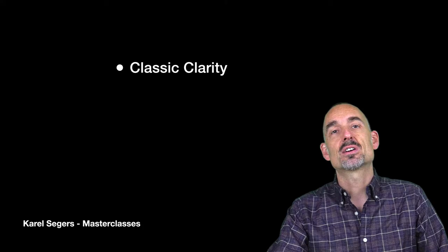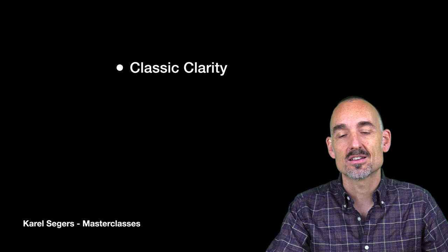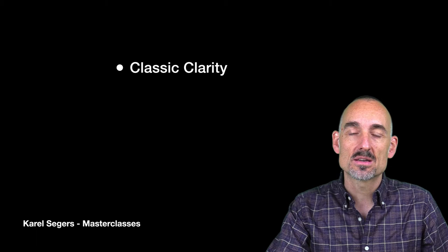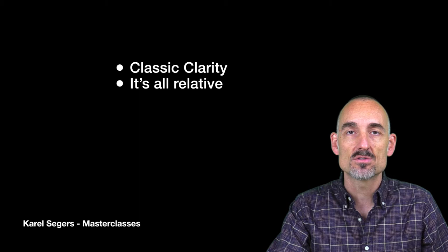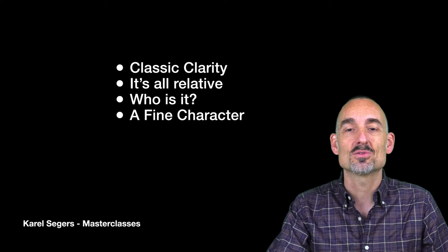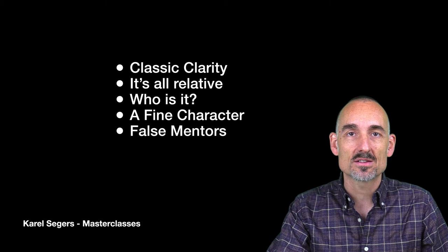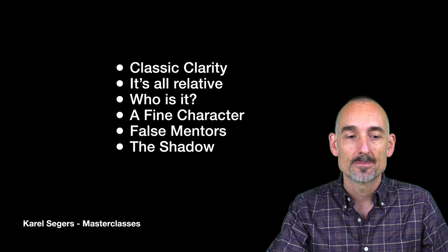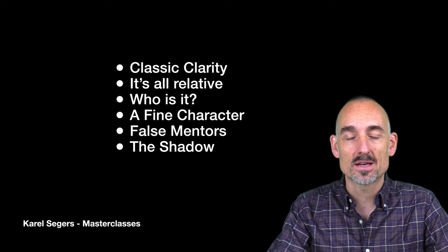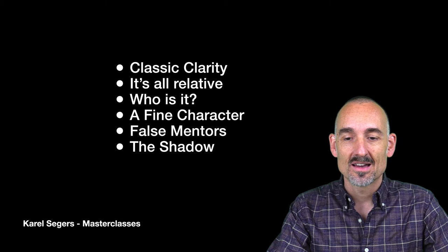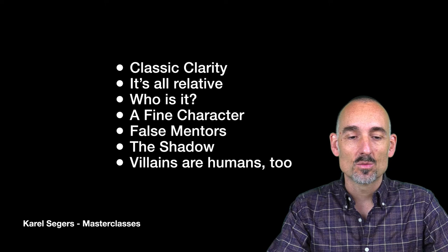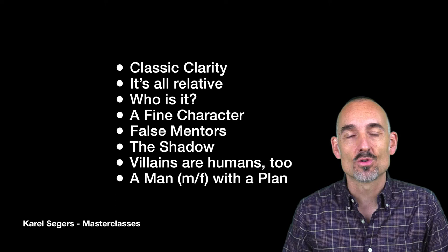Today we look at some examples of classic clarity in terms of who is the antagonist set up early and clearly. We'll talk about how these relationships are essentially relative, and how it's sometimes a challenge to identify who is the antagonist. Sometimes they're just fine, charming characters, and some of those are also false mentors. We'll talk about the shadow, and we'll come back with examples of strong shadow characters and see how that is metaphorically expressed on screen. Villains are humans too, and we want those shadow characters to be strong, resourceful, and have purpose and a clear plan.